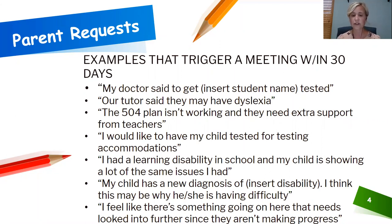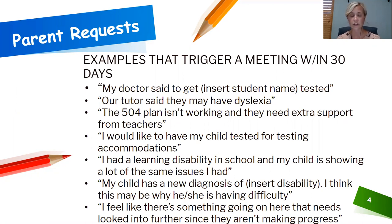These examples can include anything from a doctor requesting testing or asking for an IEP, a tutor suspecting learning challenges for a student, a significant history of disability with a family being reported, requests for student accommodations, and parents providing the school district with private evaluation information.